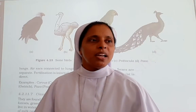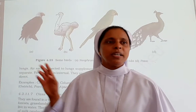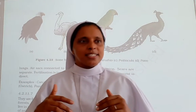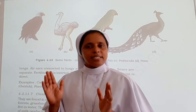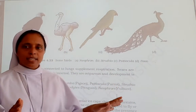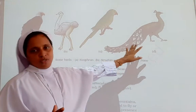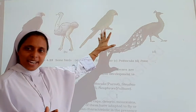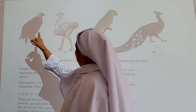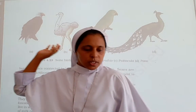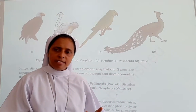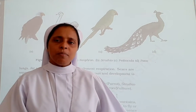Respiration is through lungs, with air sacs connected to the lungs. Sexes are separate, fertilization is internal, they are oviparous, and development is direct. Examples: Pavo (peacock), Psittacula (parrot), Struthio (ostrich), Corvus (crow), and Columba (pigeon).